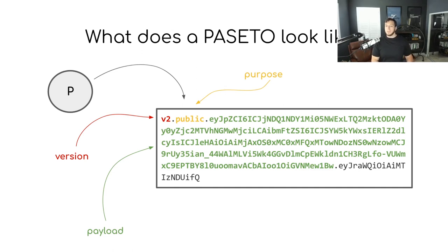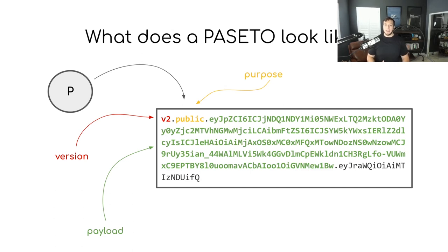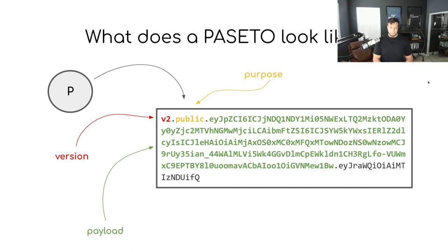The fourth and optional segment of the PASETO is called the footer. The footer doesn't always exist, but if it does, it's a cryptographically signed JSON string that allows you to put extra metadata about the PASETO in there. This is really useful for handling things like key rotation when you're working with public key cryptography.